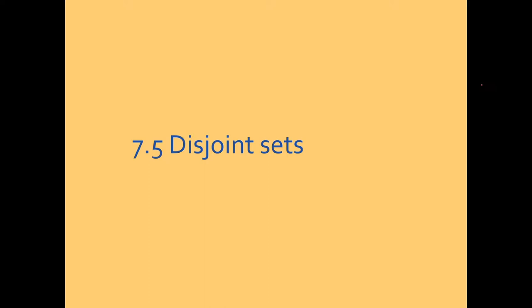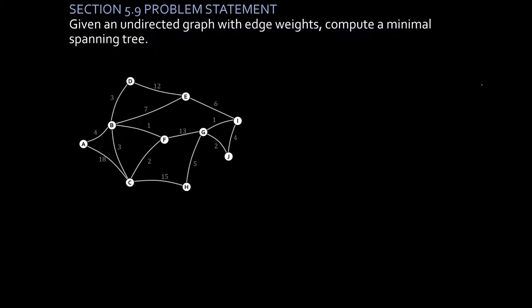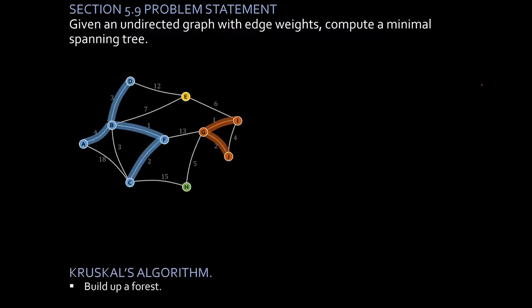Let's first review where we came across disjoint sets. Earlier in the course, we studied the minimum spanning tree problem. Given an undirected graph with edge weights, we wanted to compute a minimal spanning tree. The algorithm that we came up with, Kruskal's algorithm, proceeds by building up a forest.